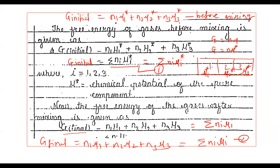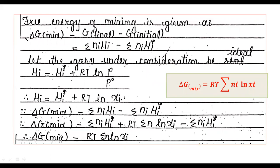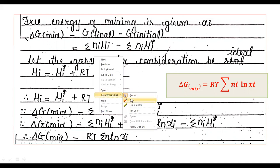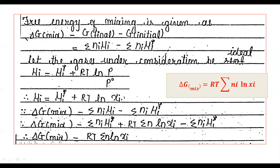The free energy change of mixing — that is, delta G of mixing — is the difference between these two: delta G of mixing equals G final minus G initial, which equals summation of Ni mui minus summation of Ni mui star. This is equation three.